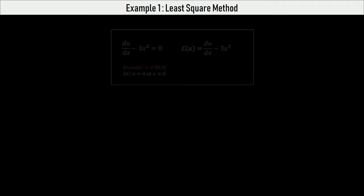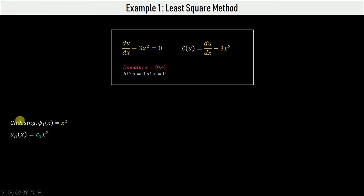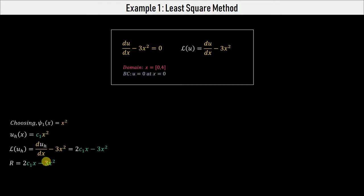This is a first order differential equation so it has just one boundary condition. We choose the basis function — let's say x squared — and construct a trial solution as a linear combination of the chosen basis function with coefficient c1. Here we are using a single basis function, so we are looking for the solution in this one-dimensional space. We then calculate the residual, which is a function of c1 and x.